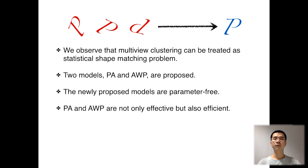We propose two clustering models, PA and AWP, to solve it. The former is a classical technique named Procrustes Analysis, and the latter is a new weighted model adaptive to the view clustering capacity.